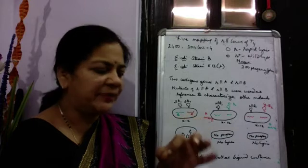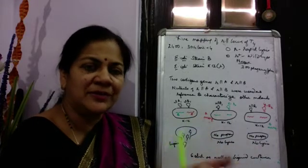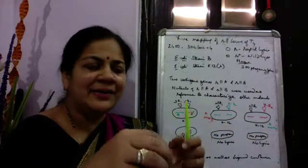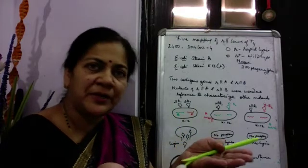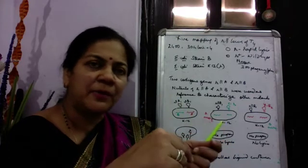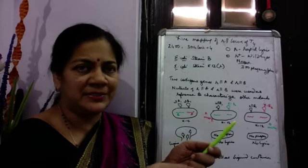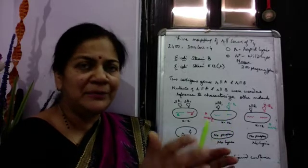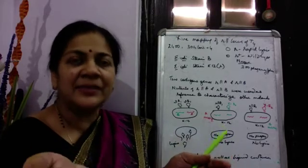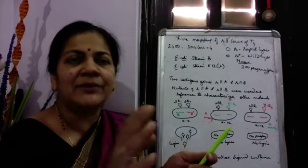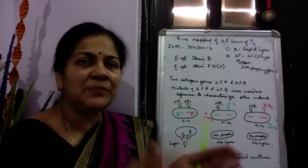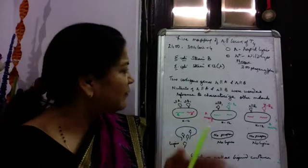Plaques are clear regions in a lawn of bacteria. When you grow a lawn of bacteria and plate phages on them, the phages infect and lyse the cells, spread out, and create clear spots that can be counted. Phages can be grown on solid medium or in liquid culture. In liquid culture, the normally turbid bacterial culture becomes clear after phage infection, meaning all bacterial cells have been lysed.